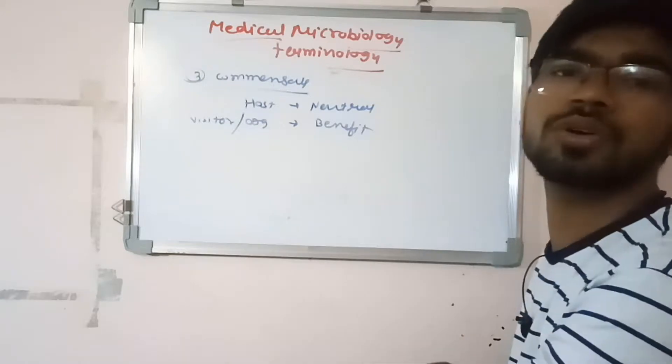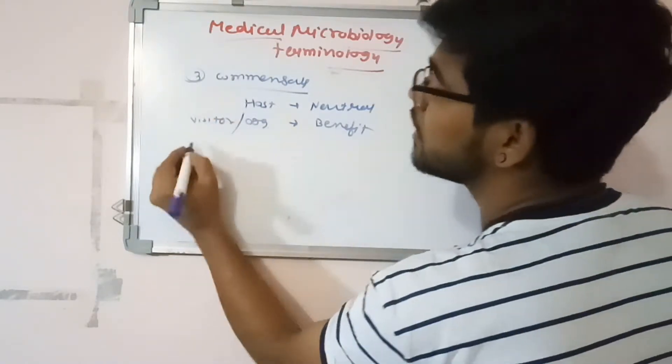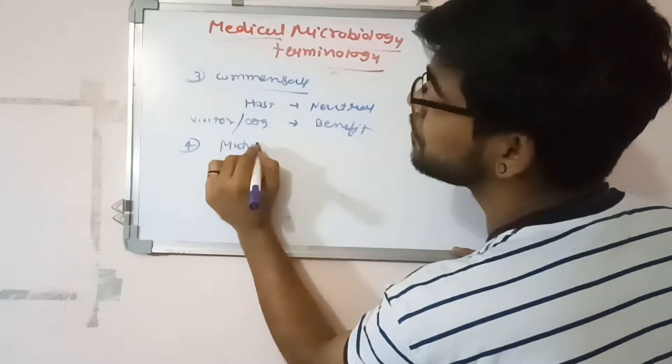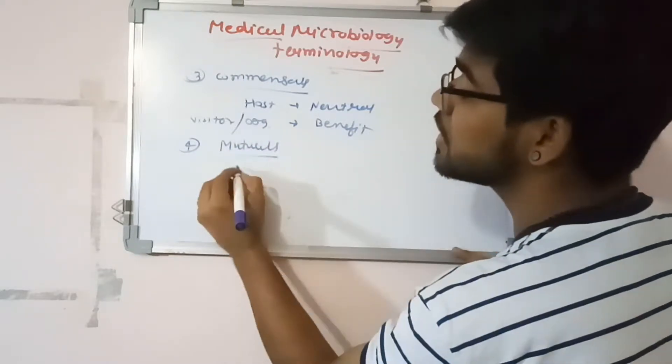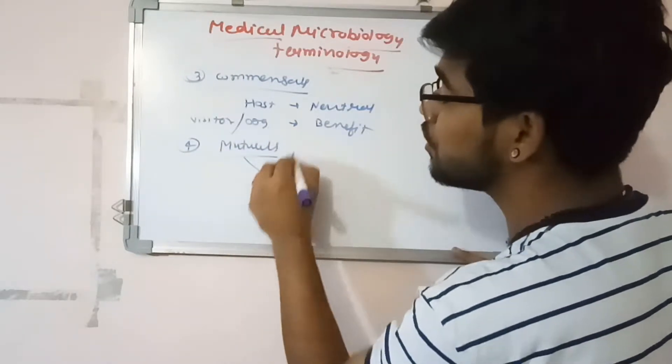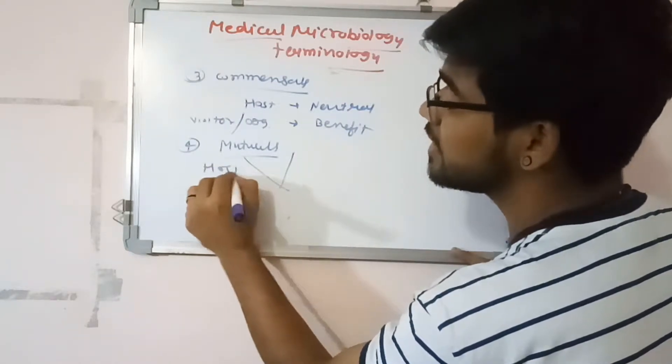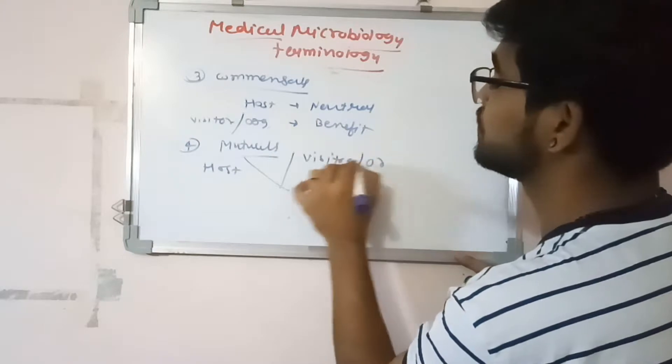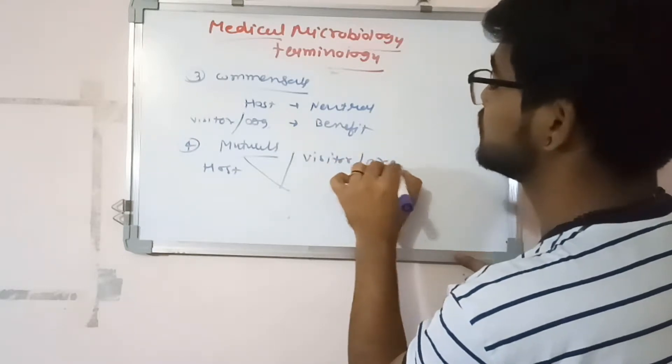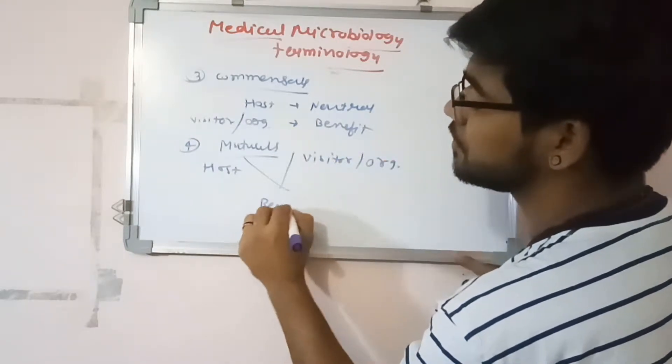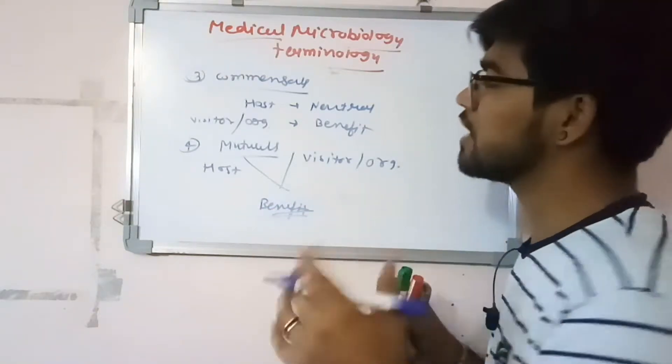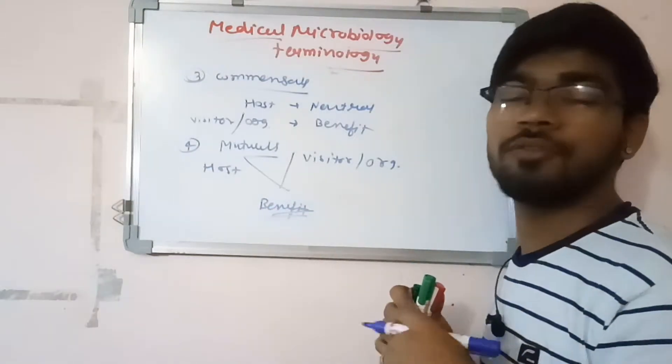Now fourth one is mutualism. What is mutualism? In mutualism, both host and visitor or organism both can benefit - both have something to take from each other. For example, our gut flora.